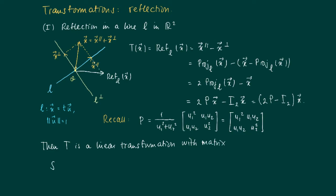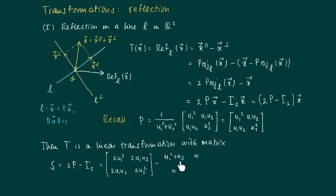The matrix is 2P minus the identity matrix. We usually write S for reflections. The reflection matrix S equals 2P minus I₂, which gives us 2u₁² and 2u₂² on the diagonal, 2u₁u₂ on the off-diagonal, minus the identity. On the diagonal, u₁² + u₂² equals 1, so we can substitute appropriately.